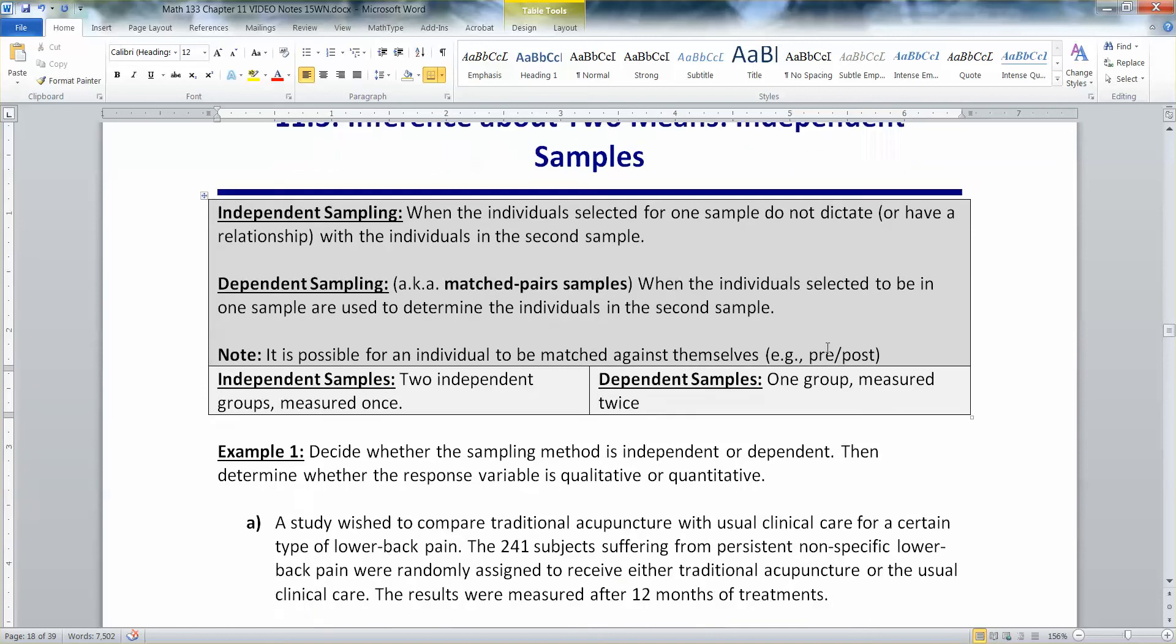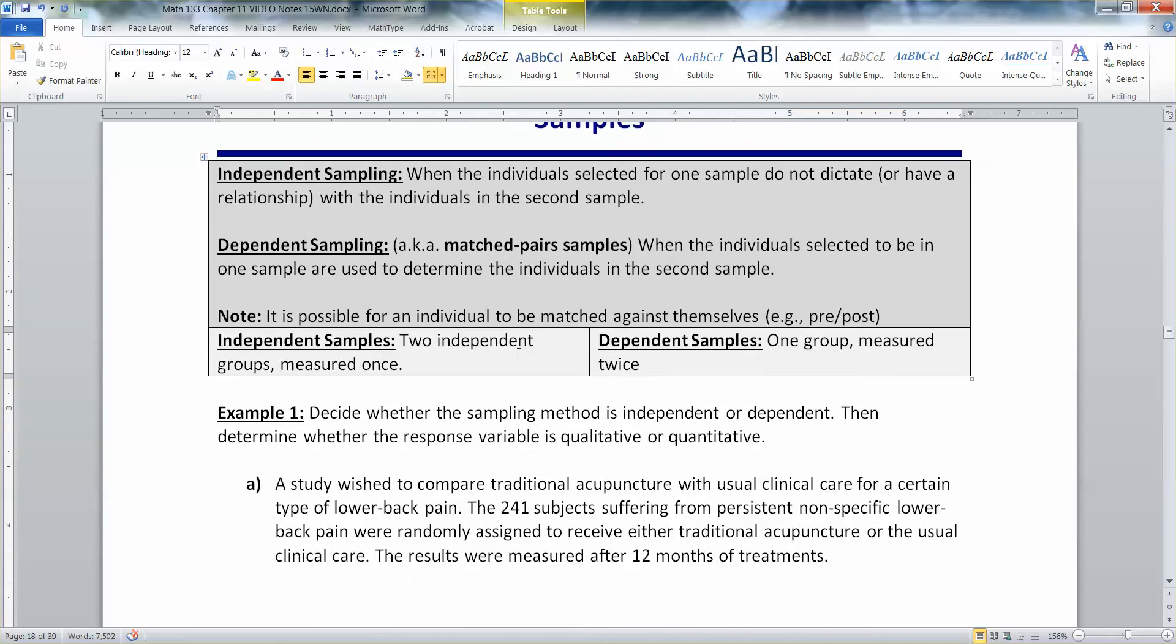In general, a little rule of thumb is to think of independent samples as two independent groups that are measured one time. And dependent samples are one group measured twice, measured like before and after, or we measure one twin then the other twin, that kind of thing.